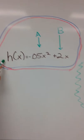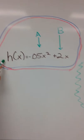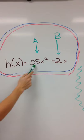h(x) is our starting equation: h(x) = -0.05x² + 2x, where -0.05 is our a and 2 is our b.